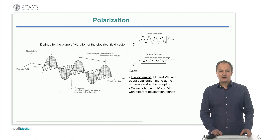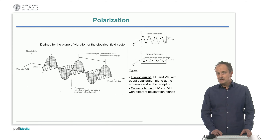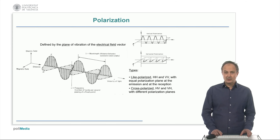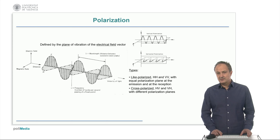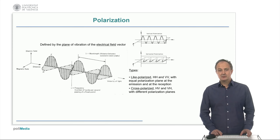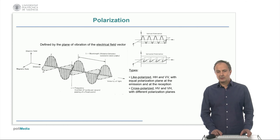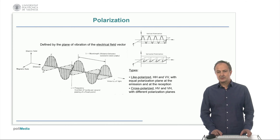Like polarization increases the signal-to-noise ratio, resulting in images with less noise. The cross-polarized systems measure the depolarization component of the signal, which is due to corner reflectors, surface roughness, or volume scattering.